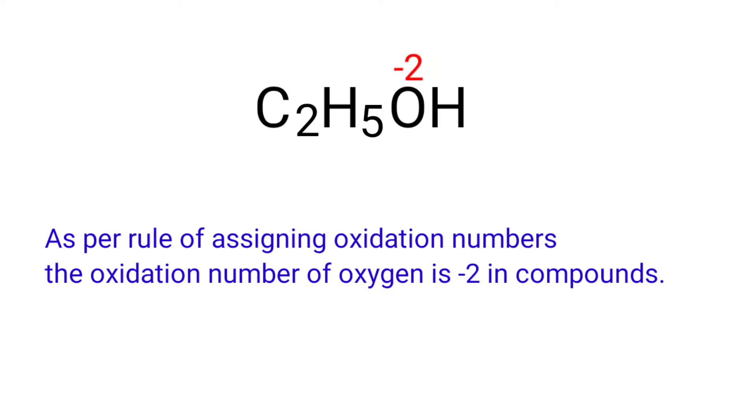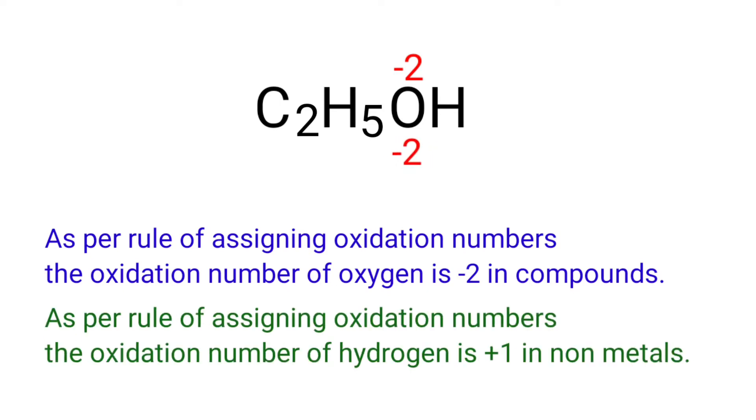We can write the oxidation number of the element above its symbol and the total oxidation number of the atoms below its symbol. As per rule of assigning oxidation numbers, the oxidation number of hydrogen is plus one in non-metals.